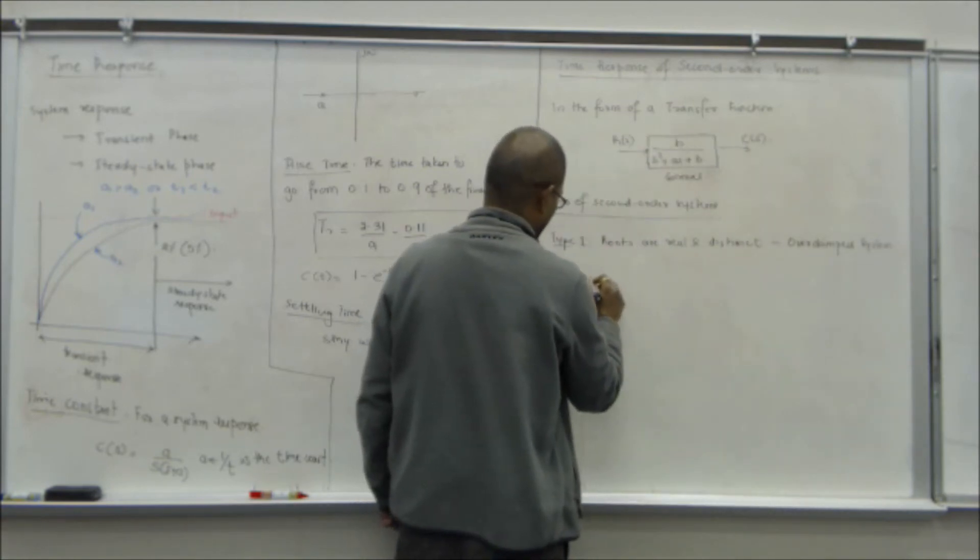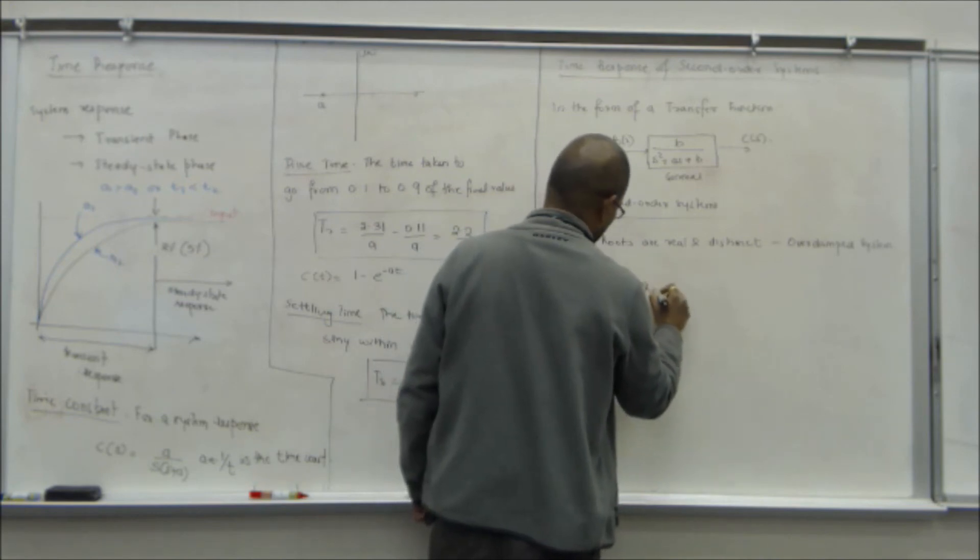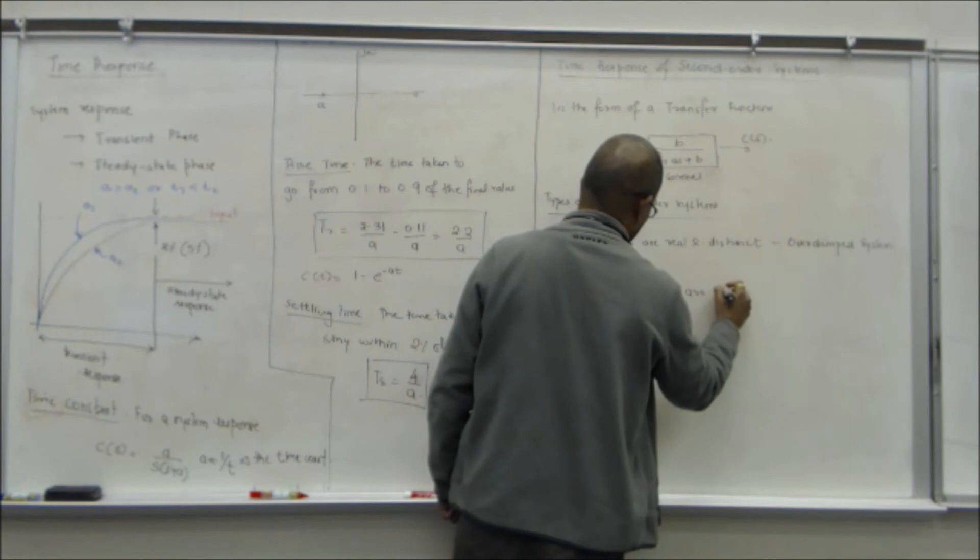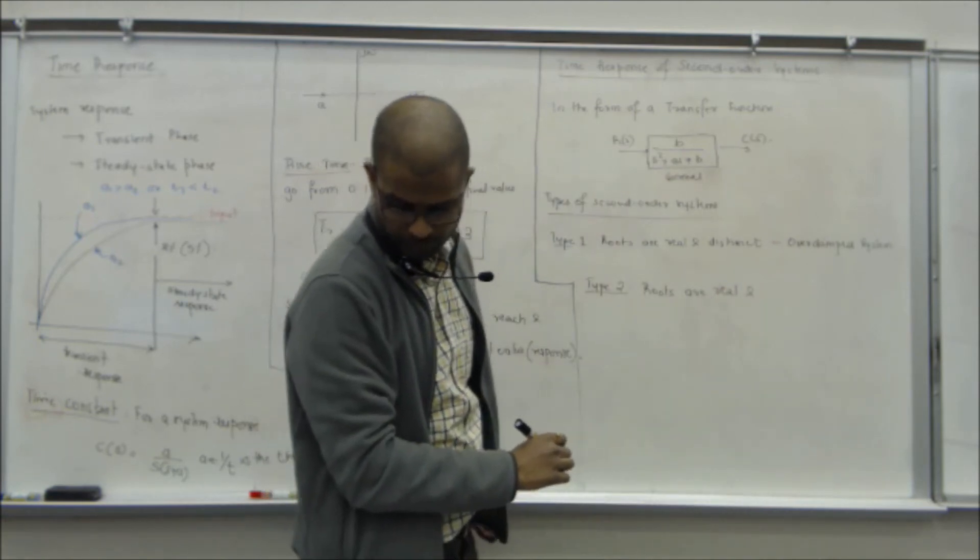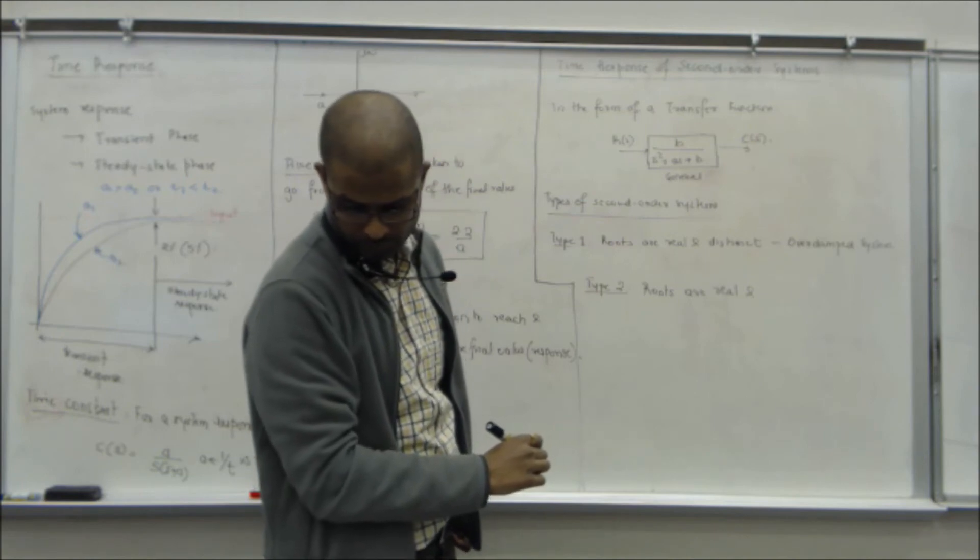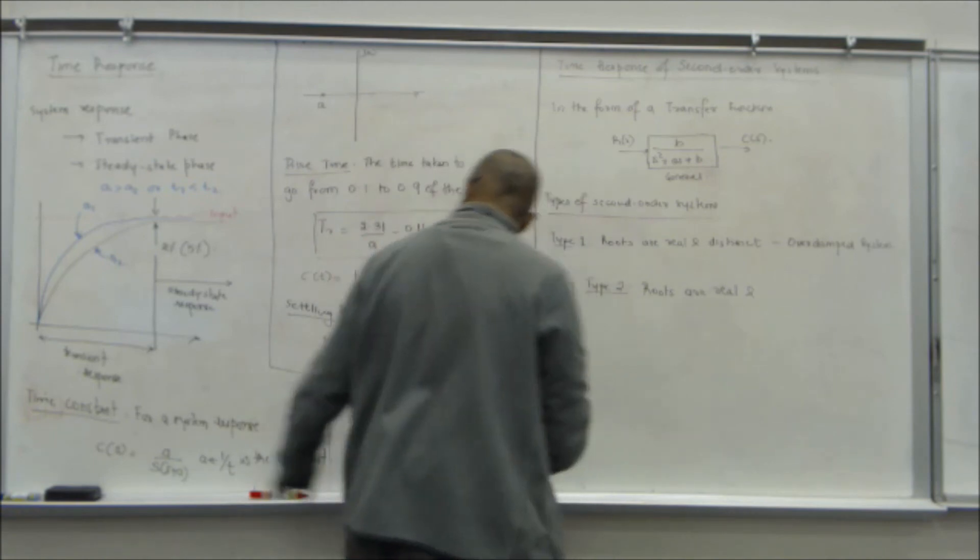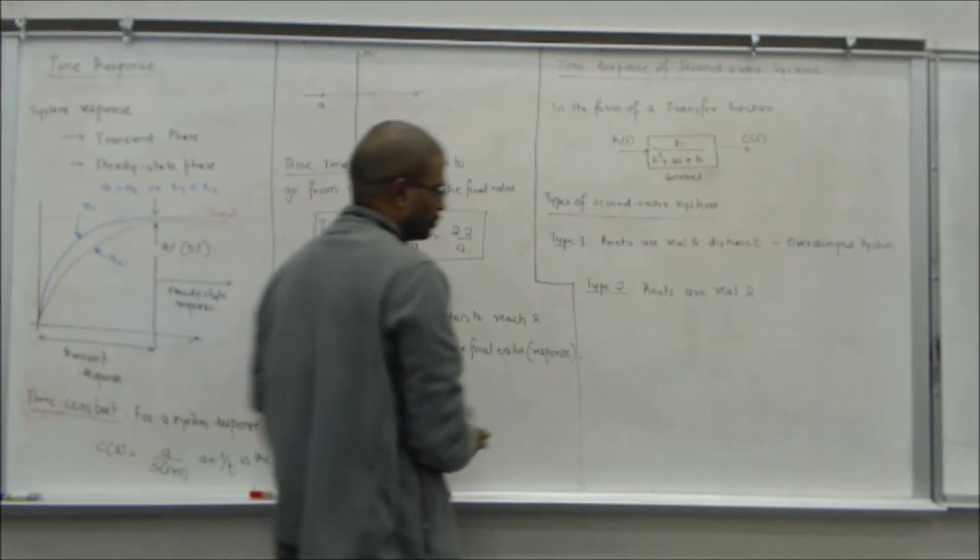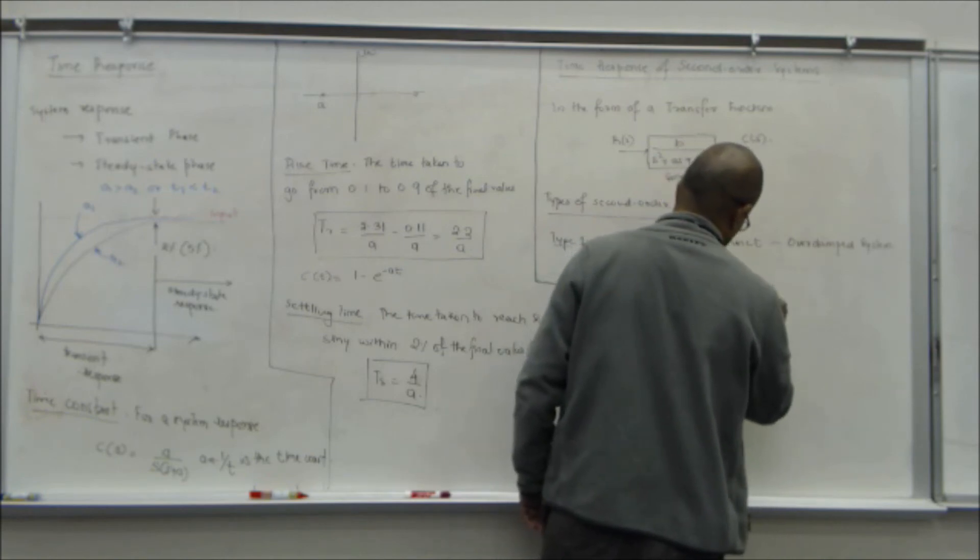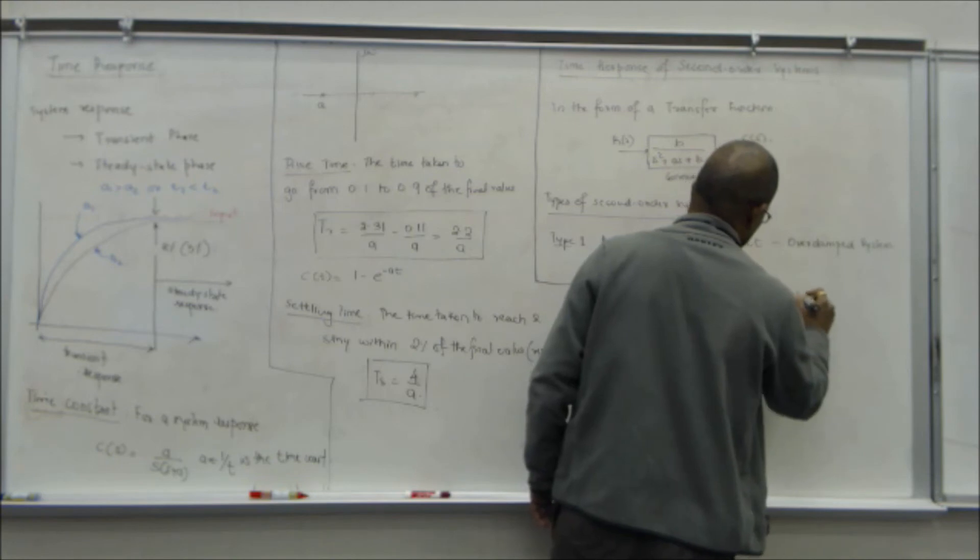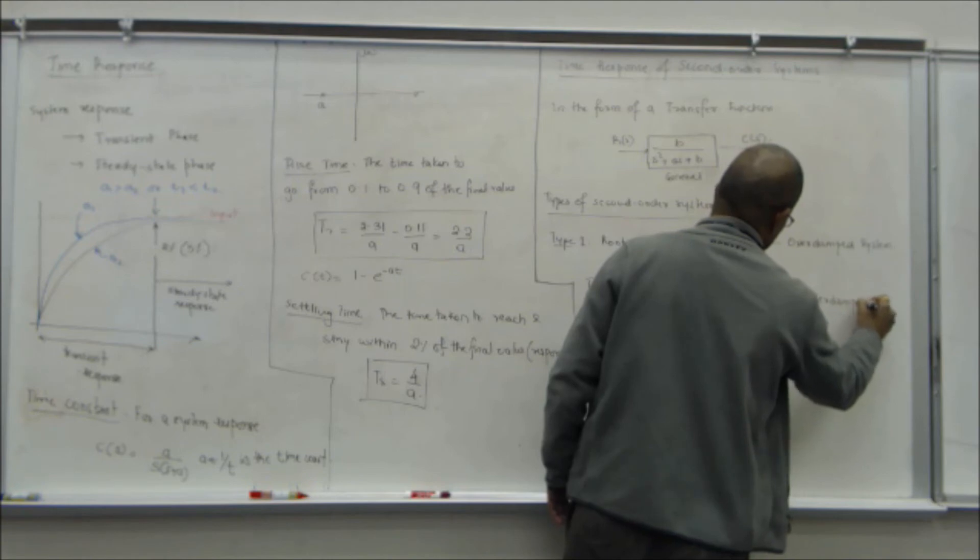Type 1 where roots are real and distinct, it is an over damped system. Type 2 roots are complex, under damped system.